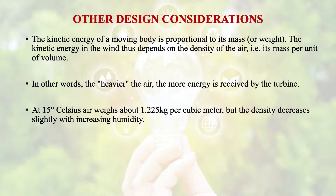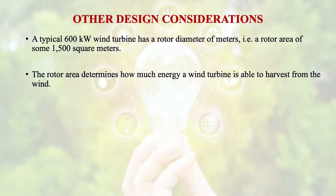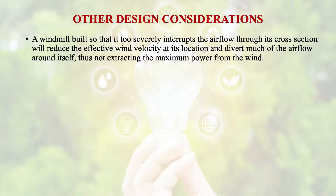This density decreases slightly with increasing humidity. A typical 600 kW wind turbine has a rotor diameter that gives a rotor area of about 1500 square meters. The rotor area determines how much energy a wind turbine is able to harvest from the wind. To be considered a good location for wind energy, an area needs an average annual wind speed of at least 12 miles per hour.